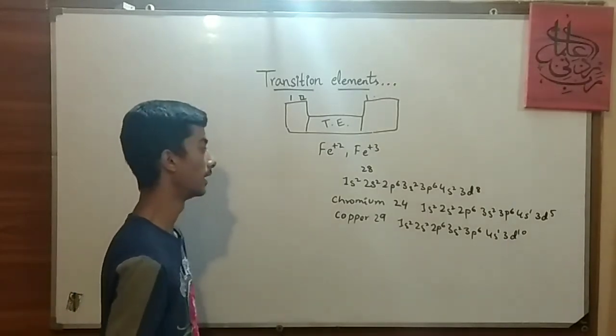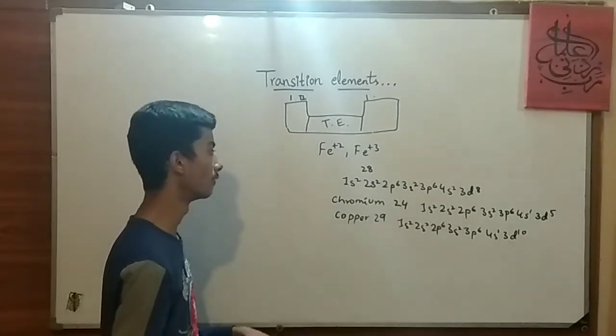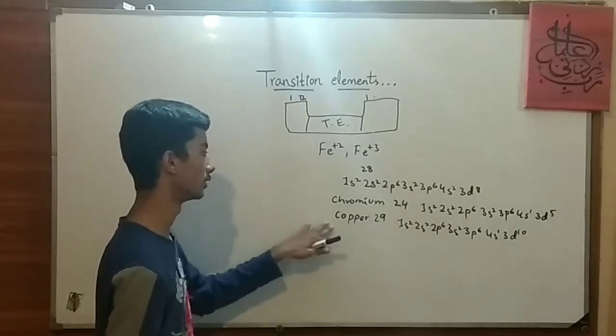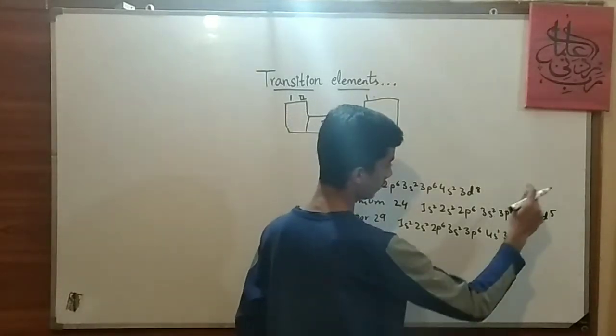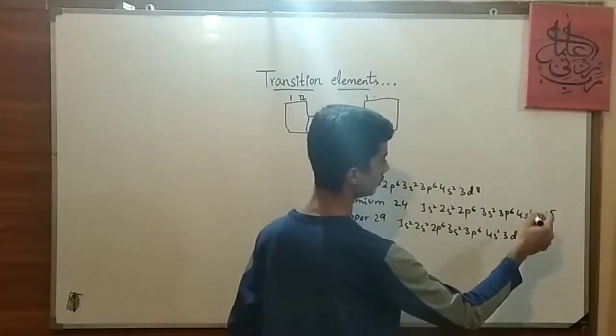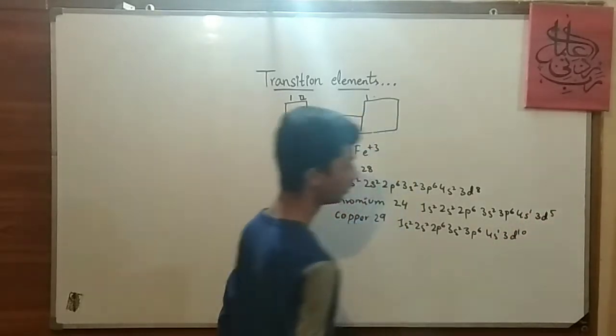And if the question asks what is the plus 2 configuration of copper and chromium, so first of all we need to remove this one which is an outer shell: 1, then 2, 3, then 1, then 2, 3.